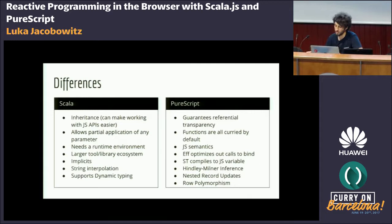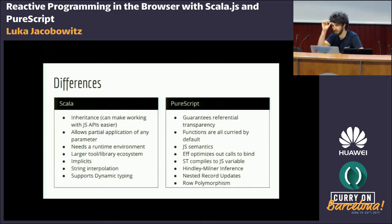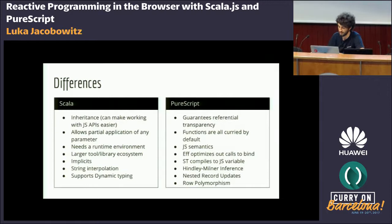Another cool feature is nested record updates. If you have a very deep immutable structure like an immutable tree and you want to update some leaf, in Scala and other programming languages this is very difficult — you have to copy the outermost object or record, then copy all inner ones as you go deeper, and only change the leaf at the end. PureScript allows a syntax that does this very easily without much boilerplate. PureScript also has row polymorphism, used for extensible effects and extensible records.